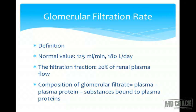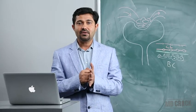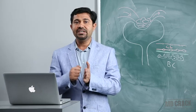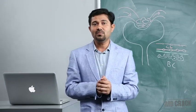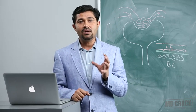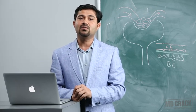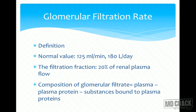The concept of GFR, that is Glomerular Filtration Rate, should be very clear. GFR is defined as the amount of filtrate formed by all the nephrons of both kidneys in a unit time. The normal value of GFR is 125 ml per minute, or 180 liters per day.